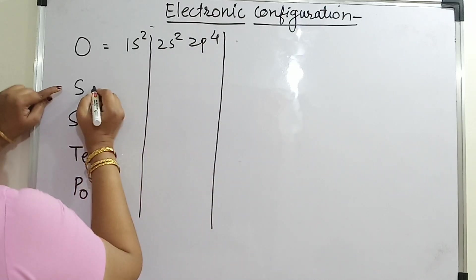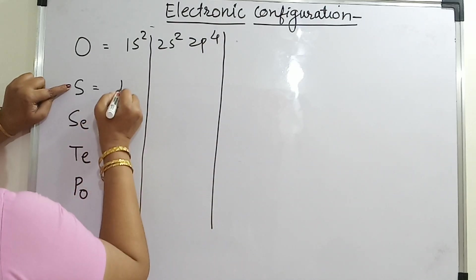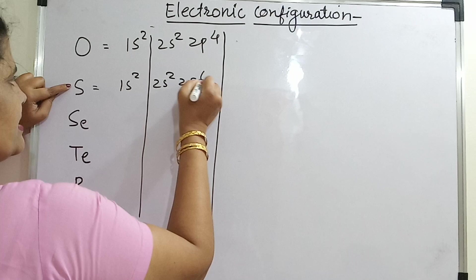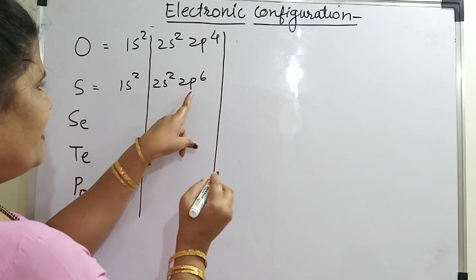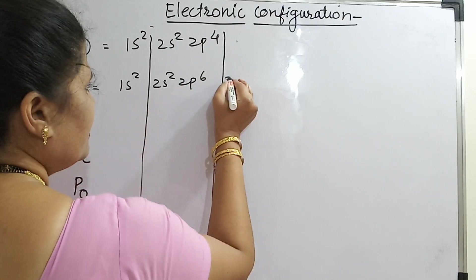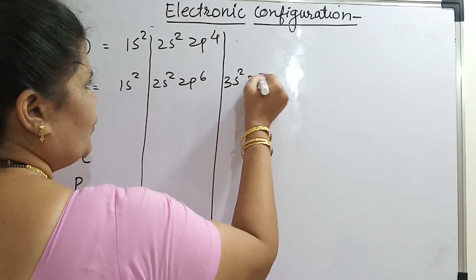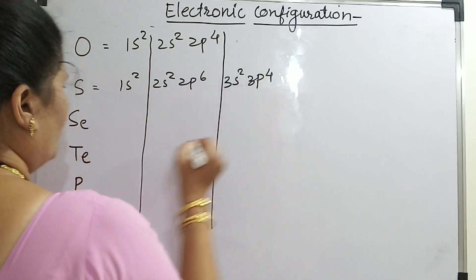Now we can practice this easily. For sulphur: 1s2, 2s2, 2p6 — this will be completely filled — then 3s2 and 3p4.